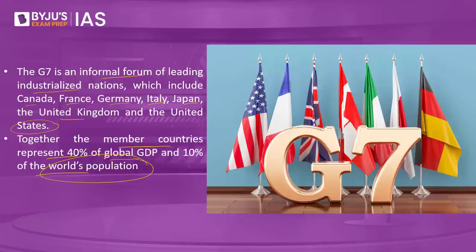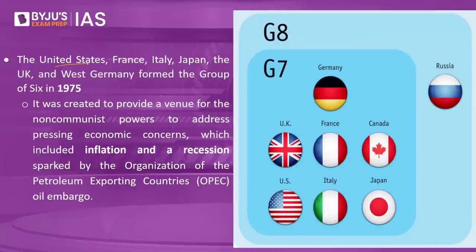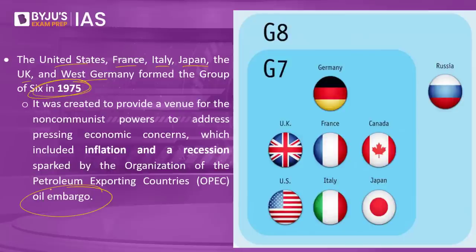When the G7 was initially formed, it was not the G7 but G6 countries. This included the United States, France, Italy, Japan, United Kingdom, and West Germany, which formed the grouping of six in 1975. These countries came together because the global economy was facing a lot of recession at that time, due to the Organization of Petroleum Exporting Countries imposing an oil embargo. Because of the energy crisis, major economies had to come together to bring an end to the recession and economic issues surfacing in 1975.